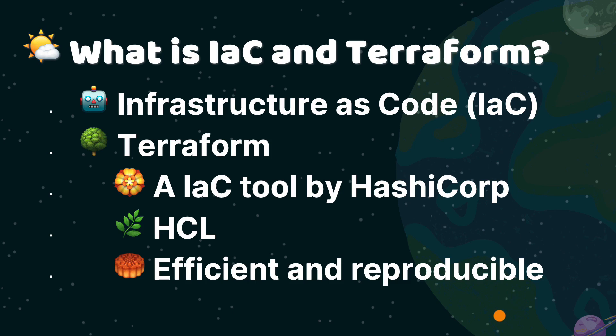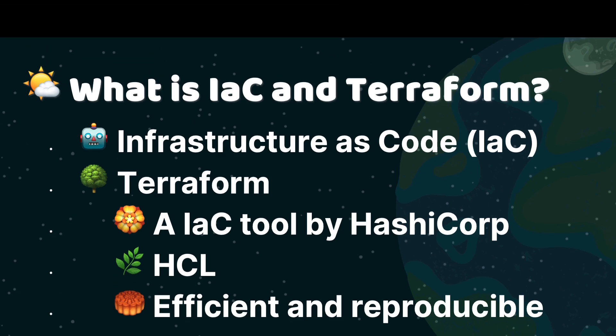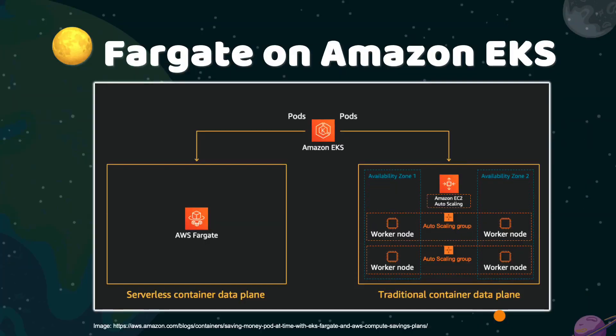Now let's transition to discussing Fargate with EKS in AWS. If you have watched my previous video on creating EKS Fargate using the AWS console, feel free to skip ahead to the mapping Terraform resource section. Amazon EKS, or Elastic Kubernetes Service, provides a managed Kubernetes service that simplifies the deployment, management, and scaling of containerized applications using Kubernetes.